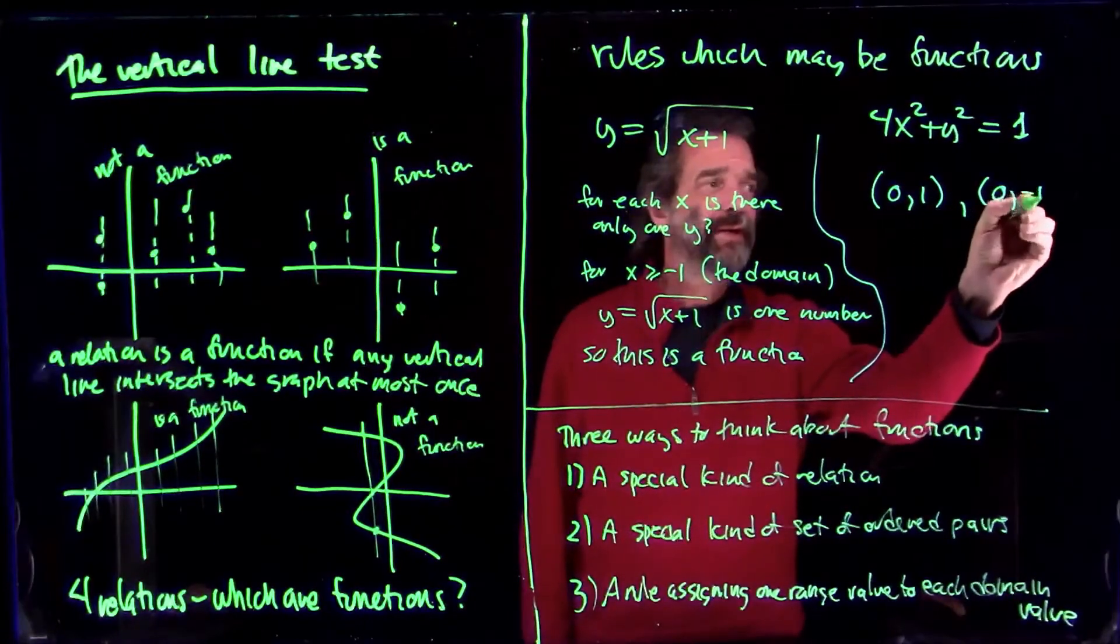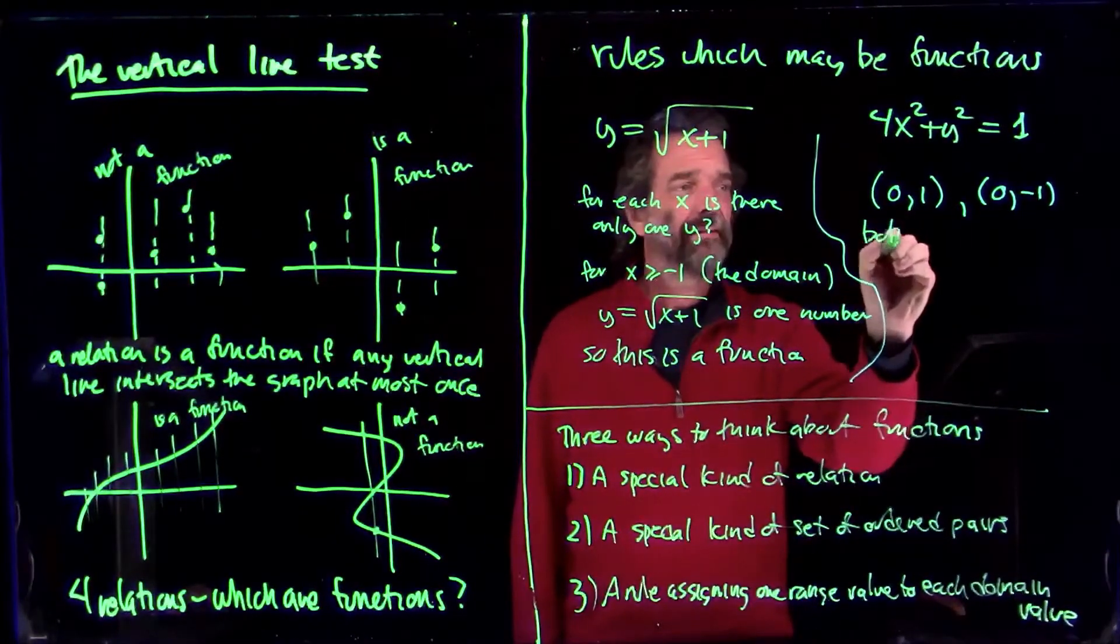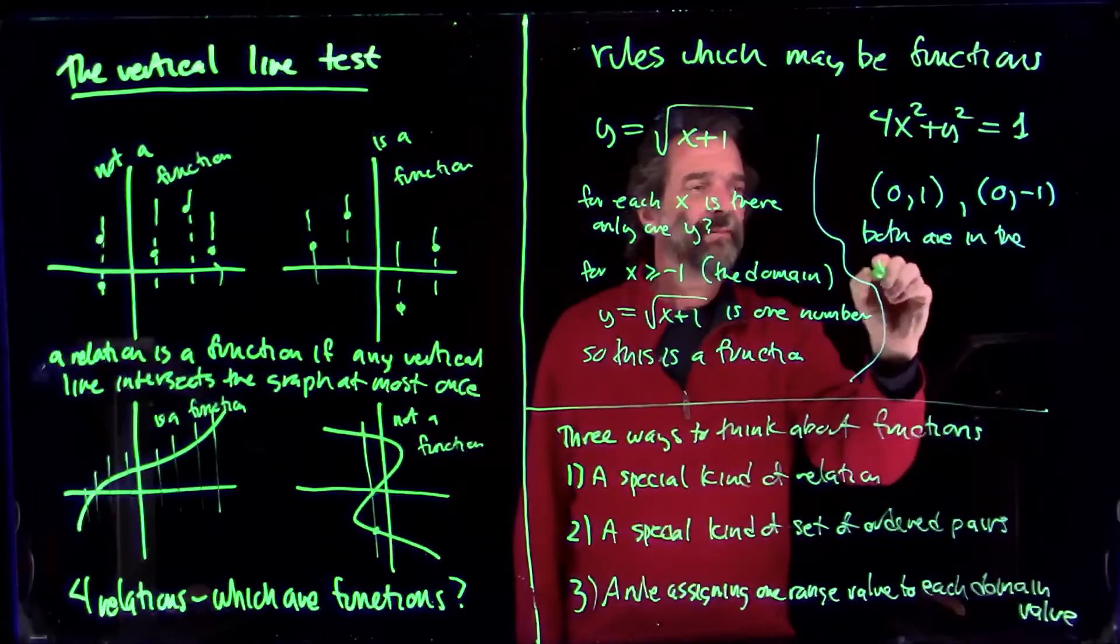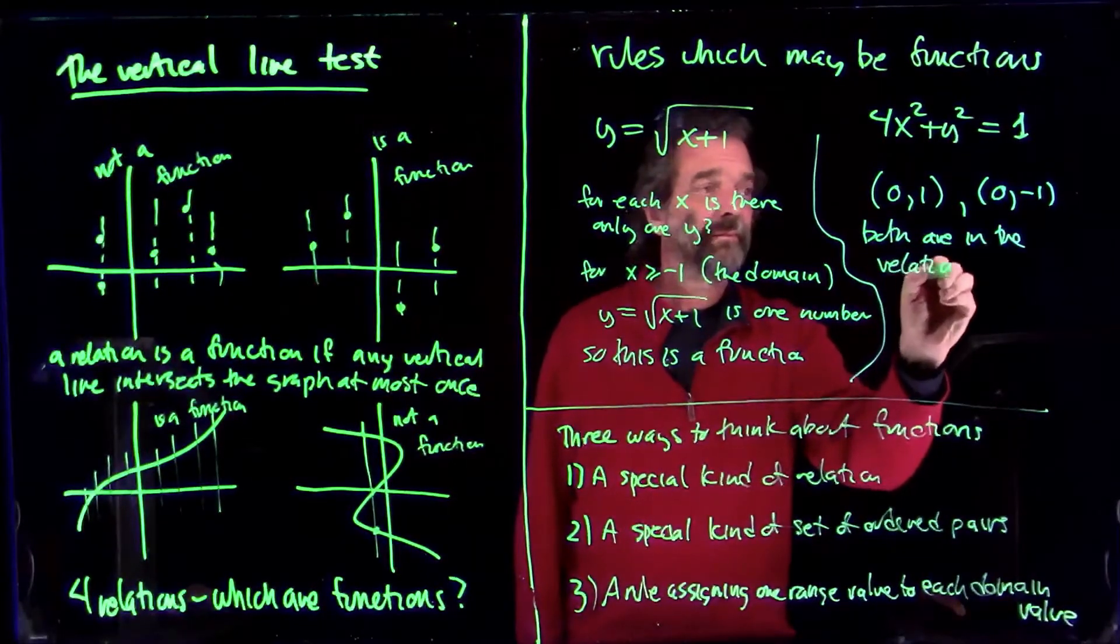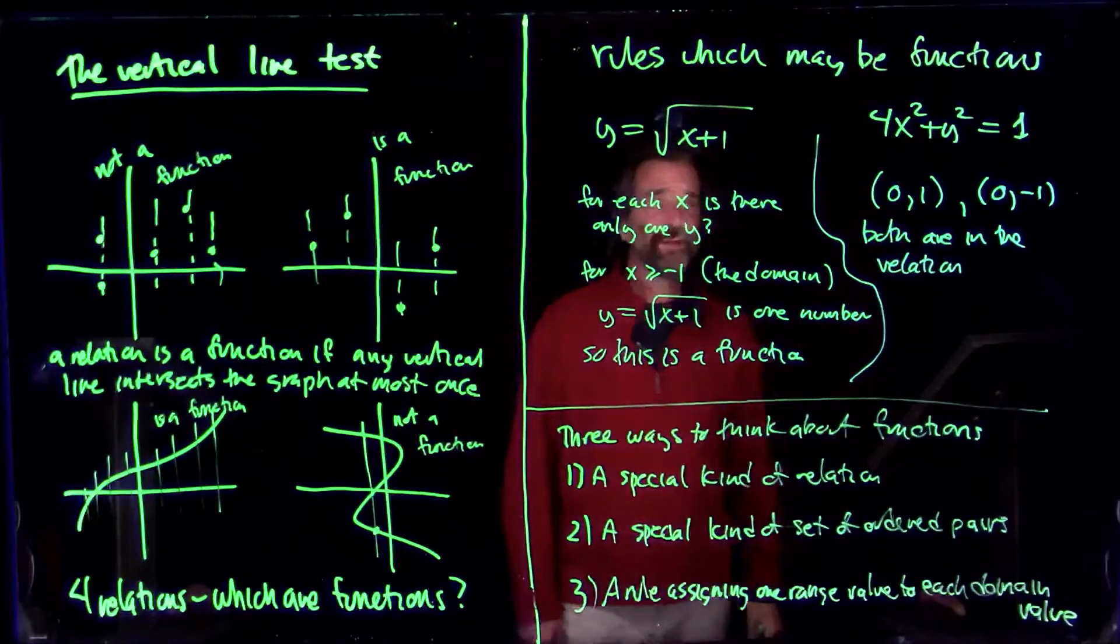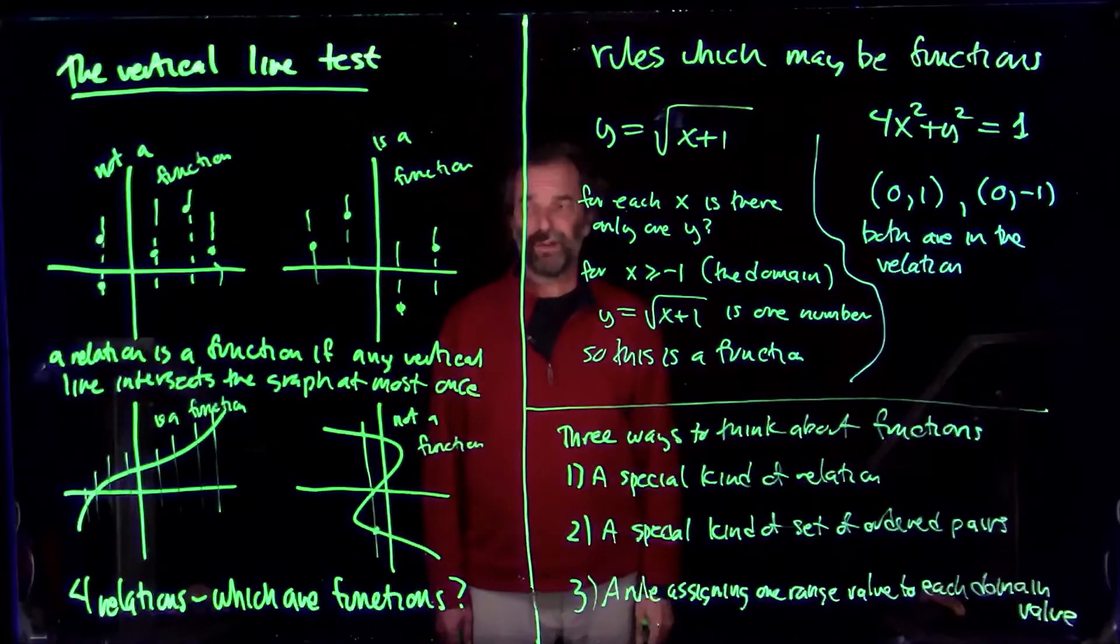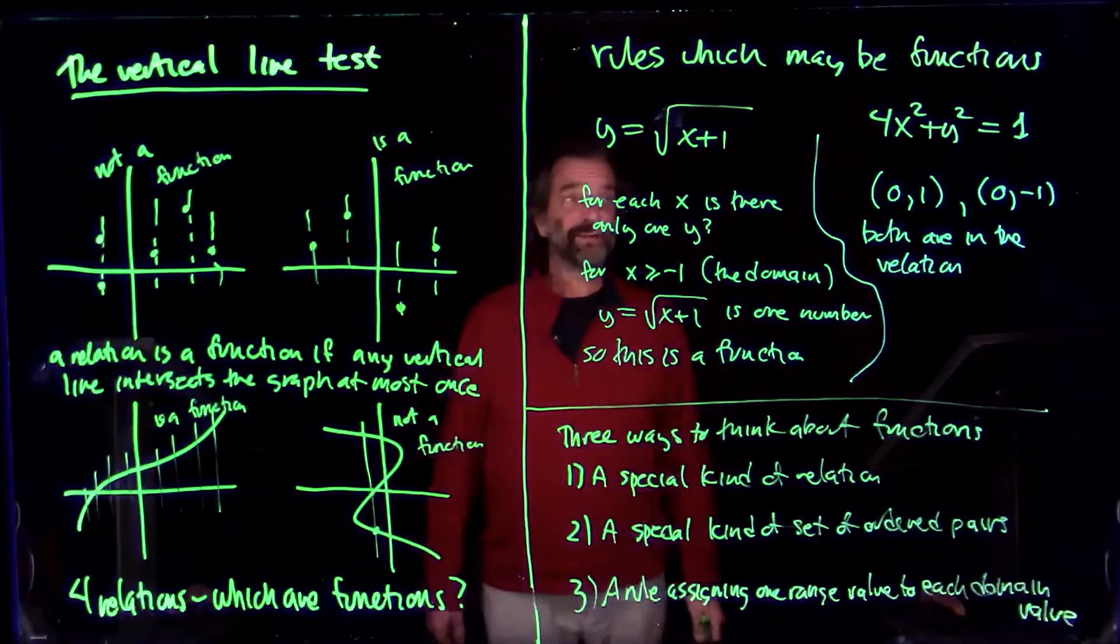But x is zero, y equals minus one. Both are in the relation. So there's two elements of the relation. They have the same x value and different y values. That's just not allowed if it's a function.